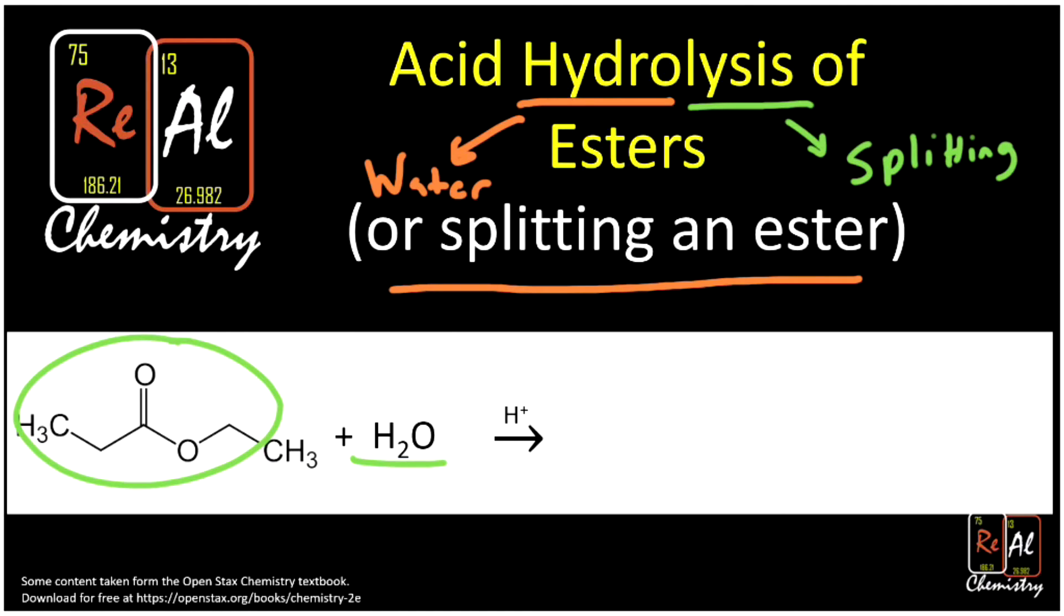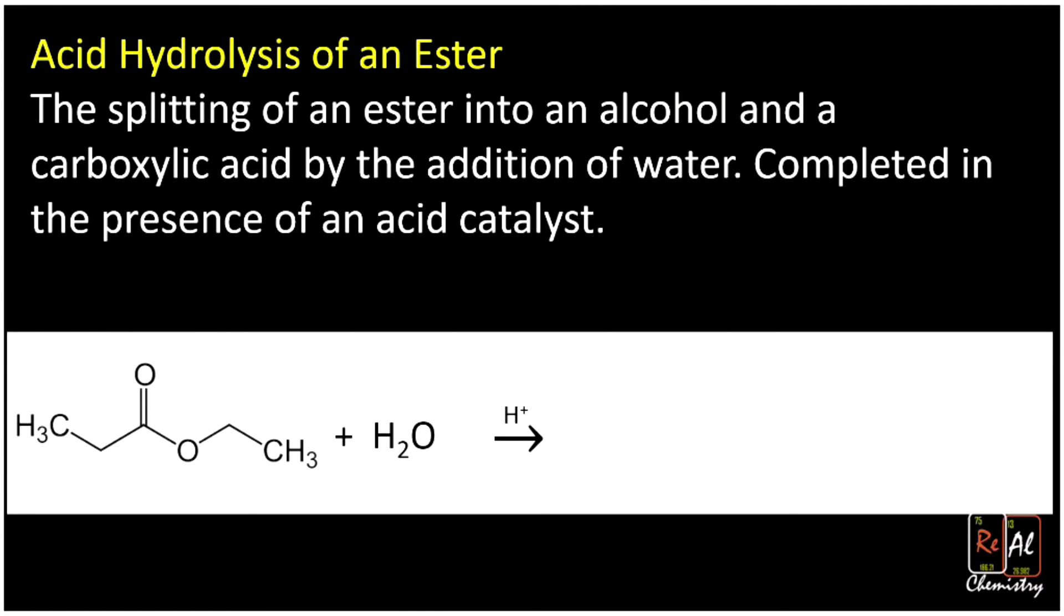Let's look at a formal definition, and then work some practice problems. The acid hydrolysis of an ester is the splitting of an ester into an alcohol and a carboxylic acid by the addition of water, and it's completed in the presence of an acid catalyst. Here's our ester, and here's our water. We're going to get back out our carboxylic acid and our alcohol. Those are the two halves that go into making an ester, and we can just take them back apart.